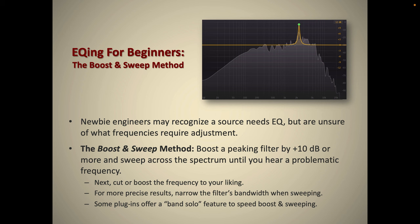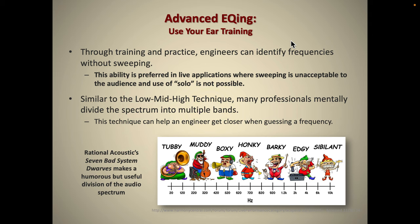A more advanced technique is using your actual ear training — you're all doing ear training — to start targeting your EQ decisions. Ask yourself: what frequency do I think this is? Maybe it's around 2k, and you zoom into that zone. I really like the Rational Acoustics seven bad system dwarves approach. You can get t-shirts and stickers. The idea is that in your head you're dividing the frequency range into very specific concepts: tubby, murky, muddy, boxy, honky, barky, edgy, and sibilant. It's like the low-mid-high technique, except now you have seven divisions. As you get more sophisticated, you may end up with ten, fifteen, or even thirty frequency categories if you develop 31-band perception. Use your ear training.